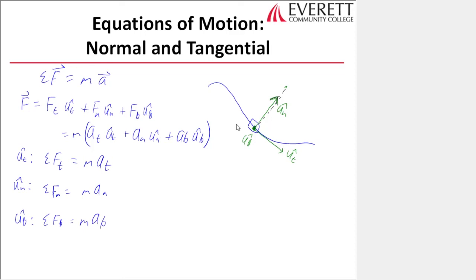What's special about the binormal direction? Since an object instantaneously going around a circle has a tangential acceleration component—felt when the car pushes you back when you hit the gas—and a normal component—felt pushing you against the door—those are the only two feelings. So acceleration in the binormal direction is always zero. If the coordinate system is set up correctly, the third equation reduces to a statics problem: sum of forces in the binormal equals zero.